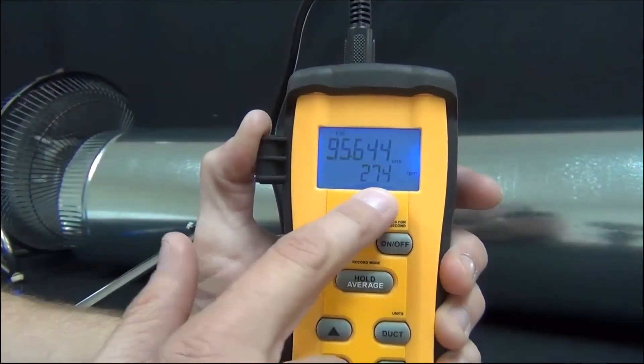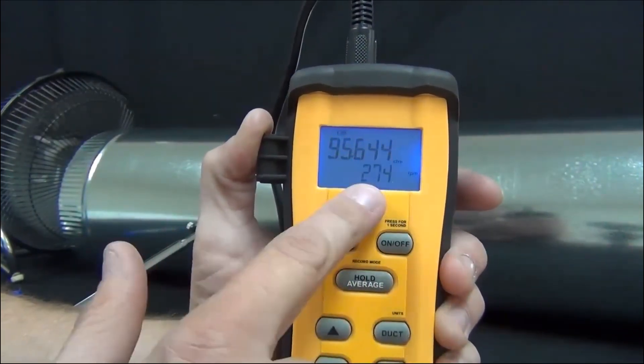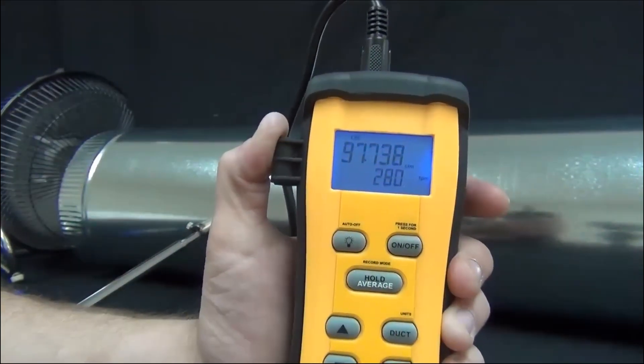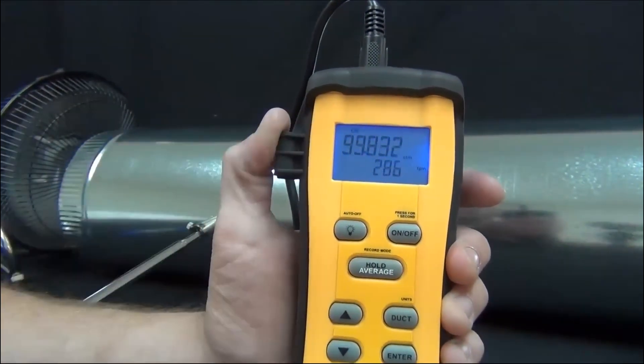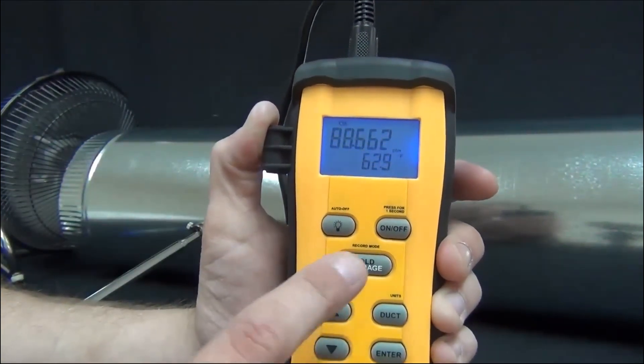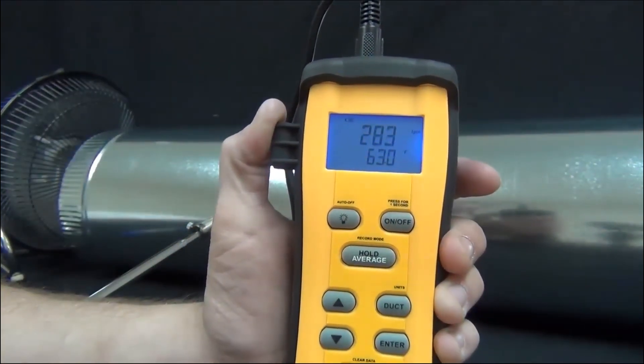And now you'll see that it's reading 274 feet per minute in the bottom display. So it's just taking the feet per minute, multiplying it by the area of an eight inch diameter duct, and calculating the CFM. Next mode is I can get CFM and temperature, and then back to feet per minute and Fahrenheit.